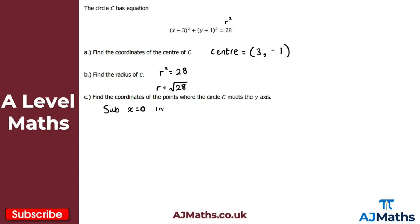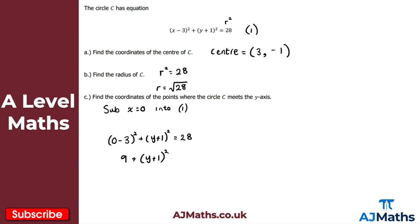Substituting x equals zero into equation 1, we get zero minus three all squared plus y plus one all squared equals 28. Simplifying: zero minus three all squared is nine, so we get nine plus y plus one all squared equals 28. From here, we want to make y the subject — subtract nine from both sides to get y plus one all squared equals 19.